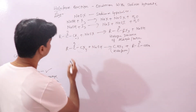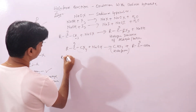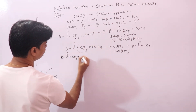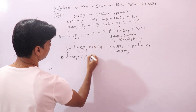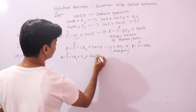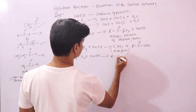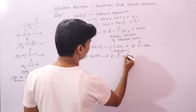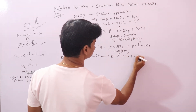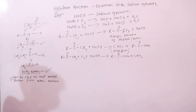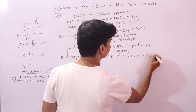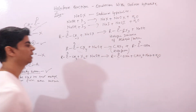You can also write this overall reaction in a single equation: the substrate treated with halogen plus sodium hydroxide gives RCOONa (the sodium salt of the carboxylic acid) plus CHX3 (the haloform) plus sodium halide plus water. Remember to balance this equation.